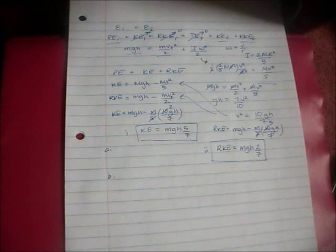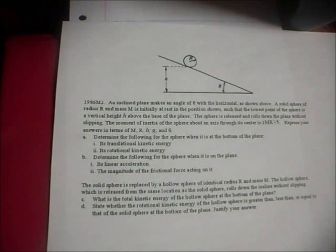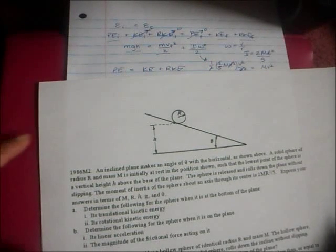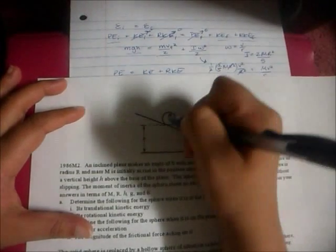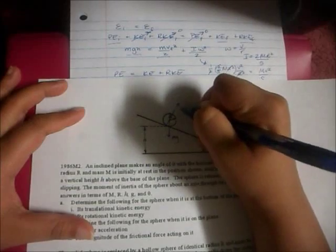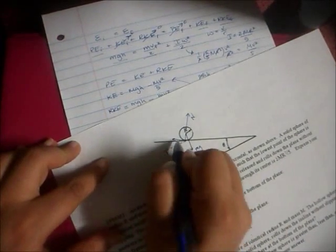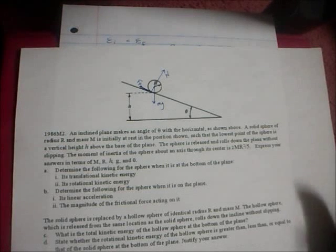Now we move on to Part B, which asks us to determine the linear acceleration and the magnitude of the frictional force acting on the sphere while it is on the plane. We look at the scenario — this is where torque comes in. Drawing the forces on the solid sphere rolling down: mg downward, normal force perpendicular to the plane, and force of friction acting alongside the plane.